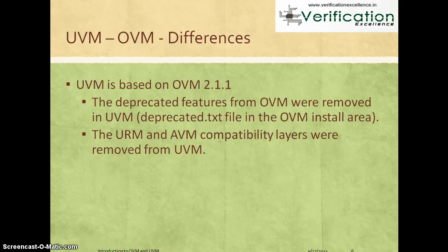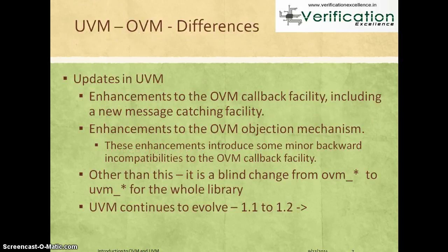A number of deprecated features from OVM were removed in UVM. If you go to the UVM install area, there is a deprecated text file listing these features. The URM and AVM compatibility layers that existed in OVM were removed from UVM — note that OVM was compatible with its predecessor methodologies URM and AVM, whereas UVM is not. UVM continues to evolve with enhancements to OVM callback facilities, messaging, and objection mechanisms.